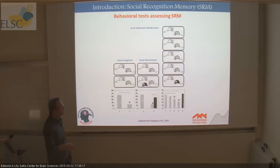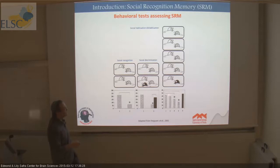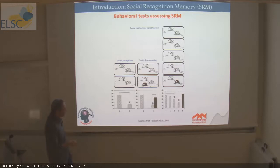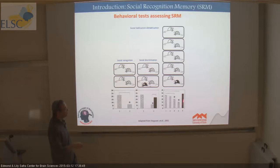A flavor of this paradigm is called social discrimination. Here we let the animal meet another animal for the first time, then we let it choose between a novel stimulus and the same stimulus during the social discrimination test. We interpret the preference for the novel stimulus as reflecting memory of the familiar stimulus. The last one is called the habituation-dishabituation test, where the animal meets the same social stimulus several consecutive times, separated by 20 to 30 minutes, and we see a very strong habituation in investigation time.